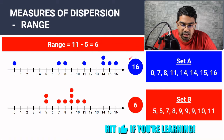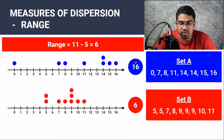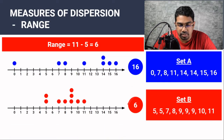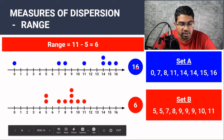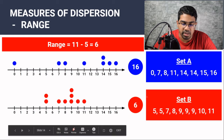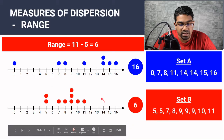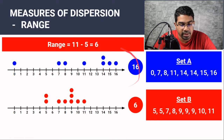When we compare the range for set A and set B, we can see that the value of range for set A is much higher than set B. And therefore, we can conclude that the data in set A is much more dispersed compared to set B. We can already confirm this visually — the data in set B is less scattered than the data in set A.